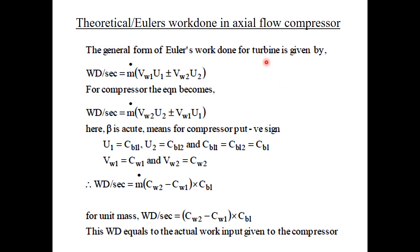The general form of Euler's work done for a turbine is given by: work done per second equal to M-dot into (VW1·U1 plus or minus VW2·U2), where M-dot stands for mass flow rate, VW1 and VW2 stand for whirl components of velocity at inlet and outlet respectively, and U1 and U2 stand for blade velocities at inlet and outlet respectively. For a compressor we can rewrite the equation as: work done per second equal to M-dot into (VW2·U2 plus or minus VW1·U1), because of the basic working difference between a turbine and compressor.